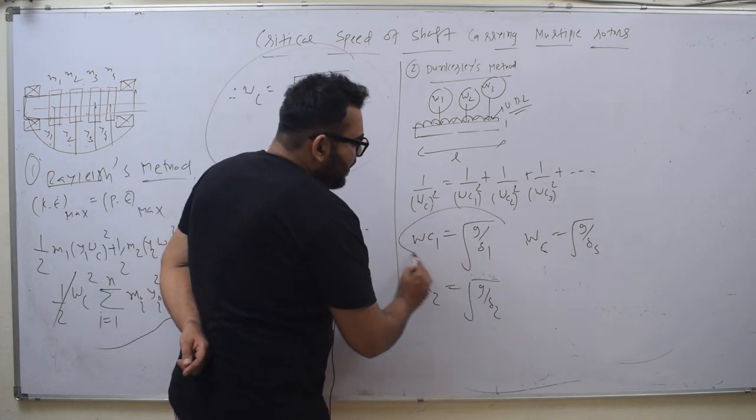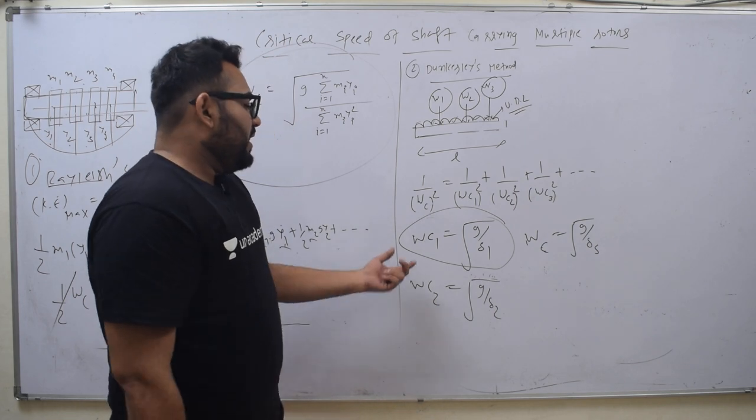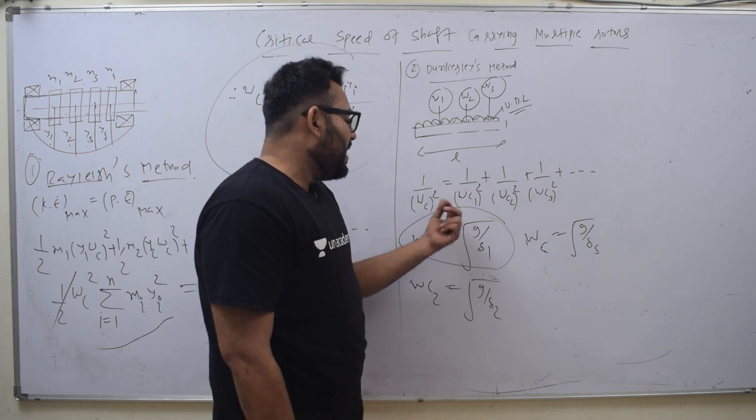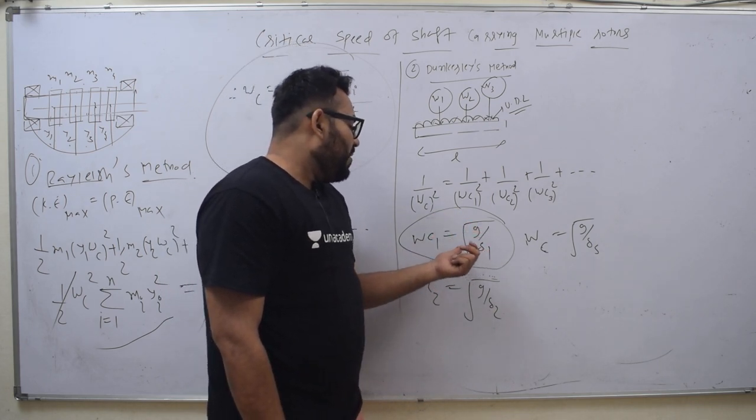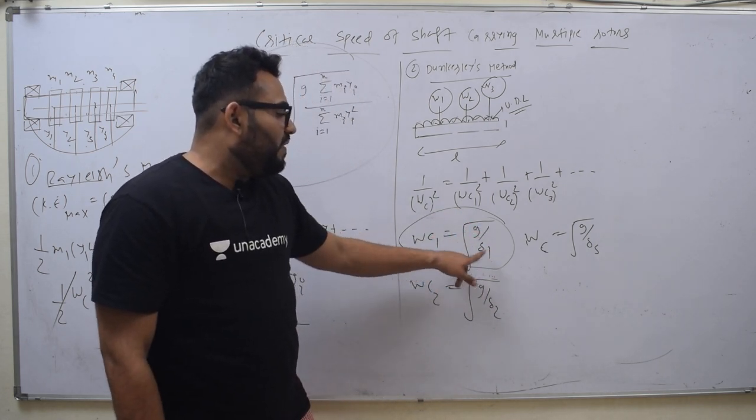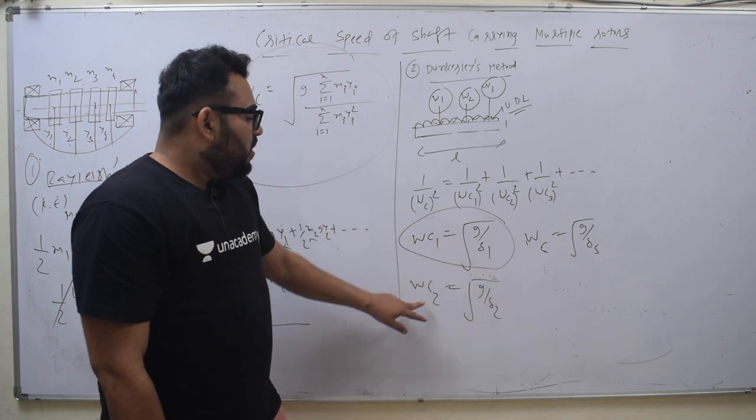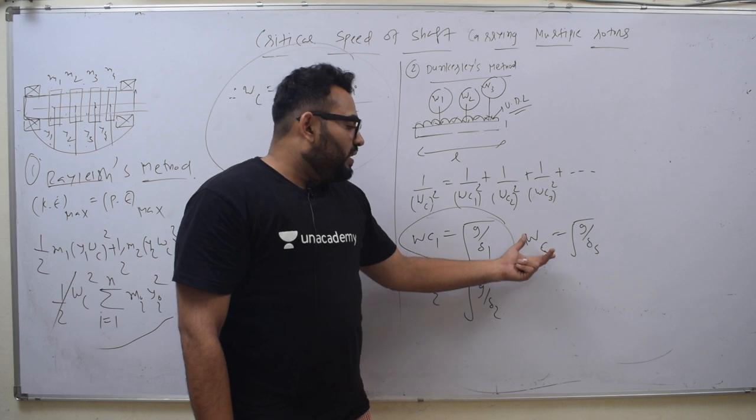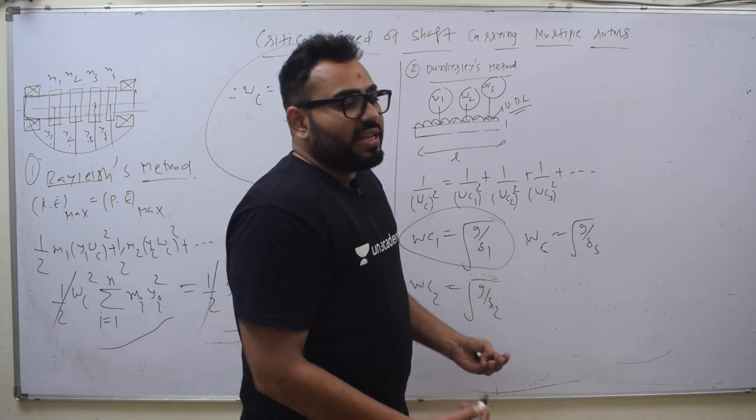Critical speed is equal to omega n. What happens? K by m. But in K by m, how can I write under root of G by delta? In the deflection of delta 1, G upon delta 1. In that way, under root of G by delta 2.